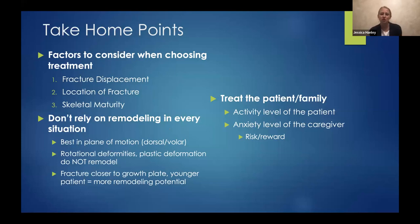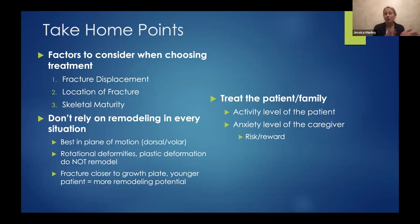Treat the family and the patient, considering the activity level. Some kids need to be pushed with motion; others need to be wrapped in bubble wrap because they are too active — and that may dictate cast versus splint. The anxiety level of the caretaker also matters — you have to have that conversation when choosing your treatment.